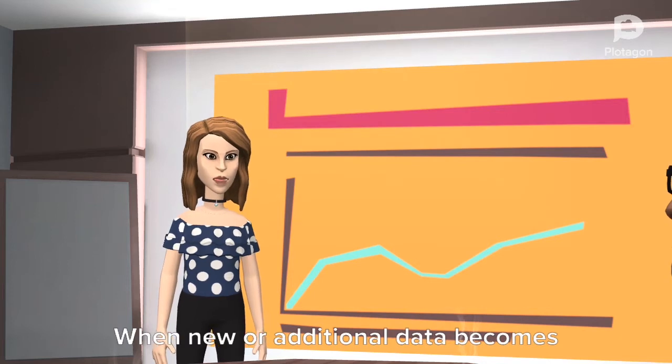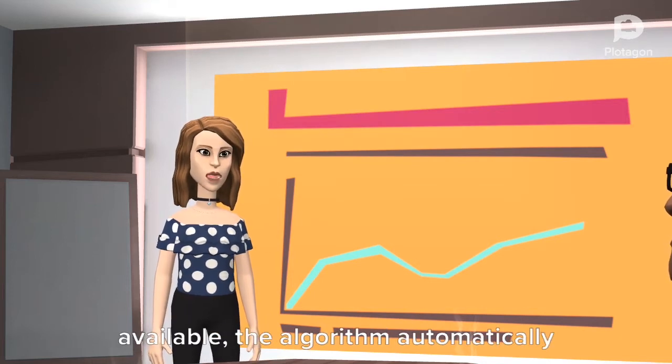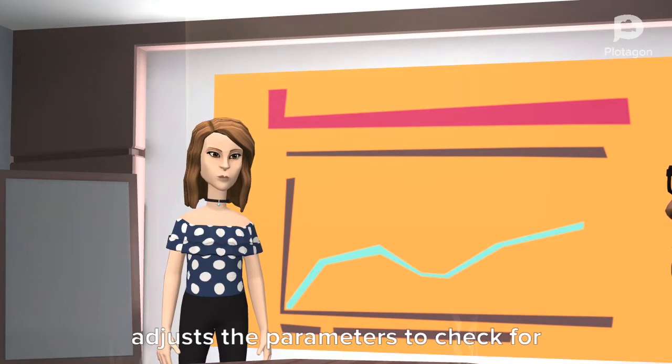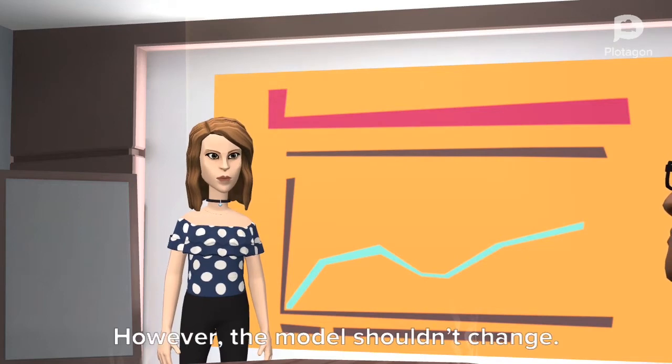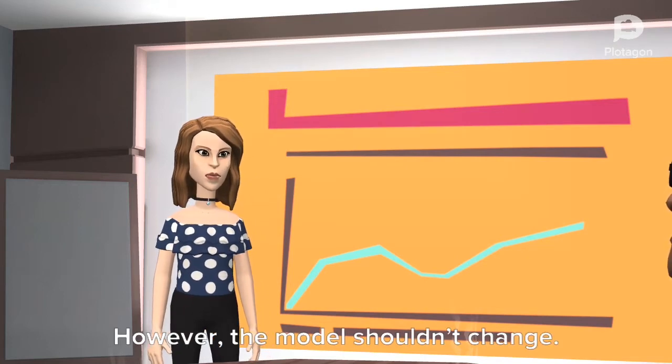When new or additional data becomes available, the algorithm automatically adjusts the parameters to check for a pattern change, if any. However, the model shouldn't change.